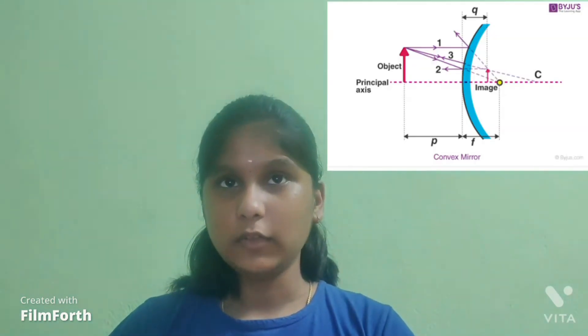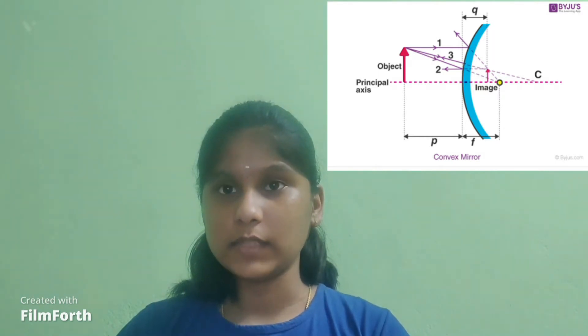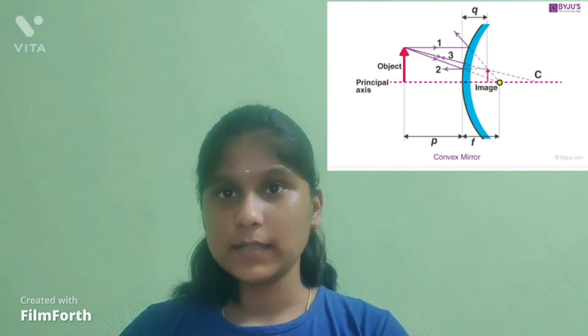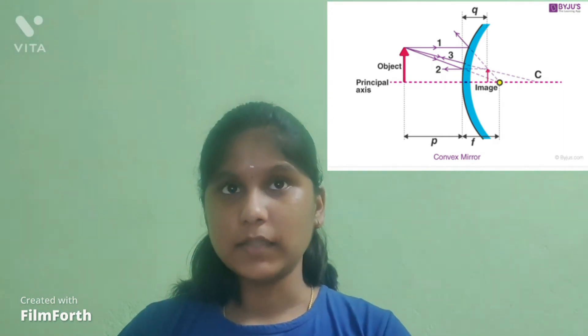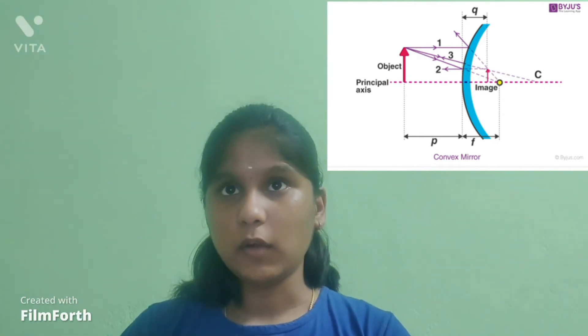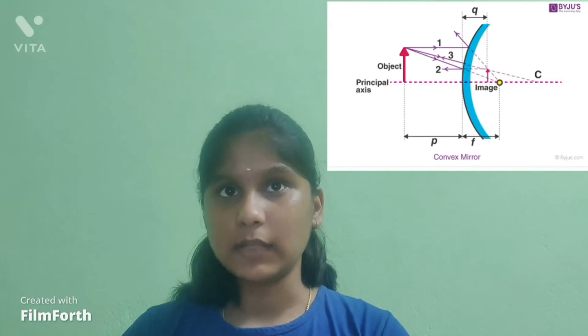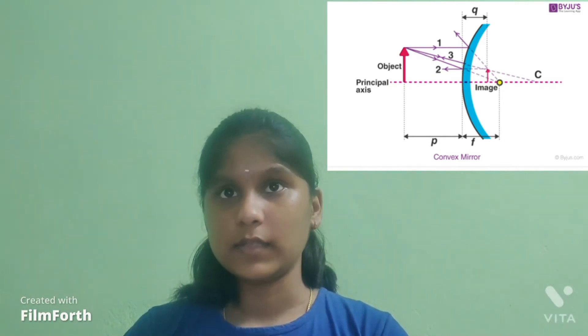In this diagram, the center of the original sphere is called the center of curvature C, and the line that passes from the mirror surface through the sphere center is called the principal axis. The mirror contains a focal point F located along the principal axis, which is the midway between the center of curvature and the mirror surface.